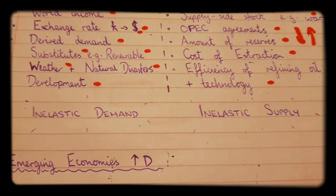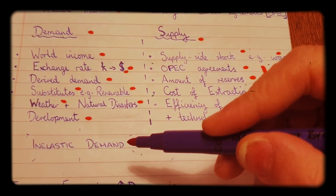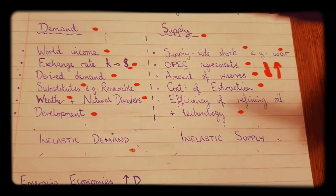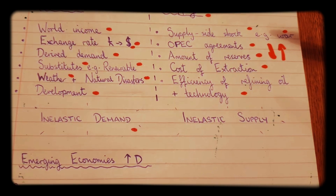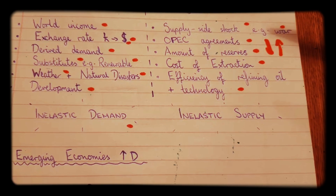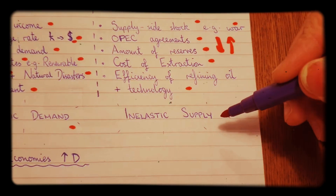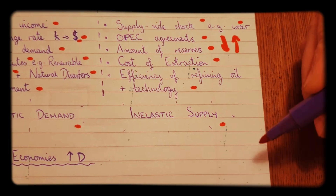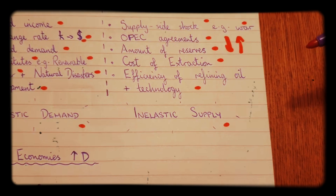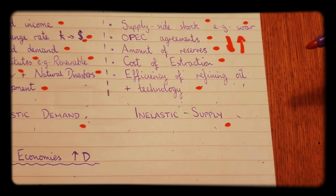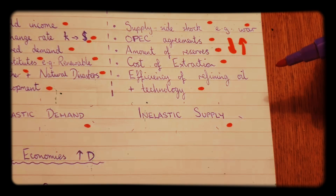If you think about how important oil is, the demand curve in this market is going to be inelastic — people are not very price sensitive to oil because it's such an essential. Also, in terms of supply, because it takes a long time to produce oil and there's not much of it, there is a fixed supply. When it runs out, it will run out. So we say that the supply is also inelastic.